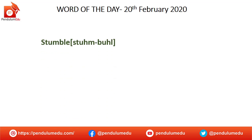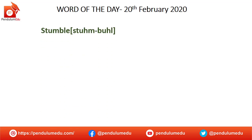So friends, jo aaj ka word hai, wo hai stumble. So the correct pronunciation for this word is stumble. Yeh jo hai ek verb hai. Thik hai, yeh part of speech kounsa hai? Stumble is a verb.